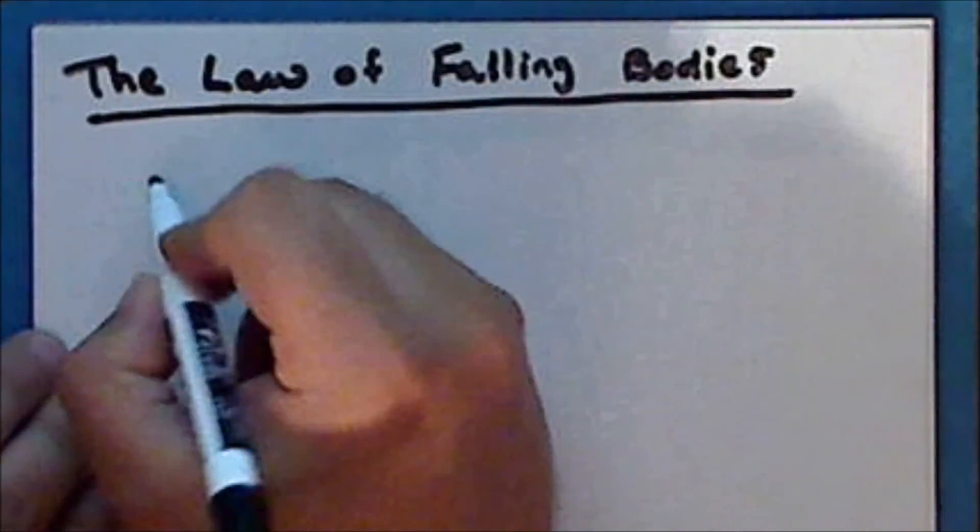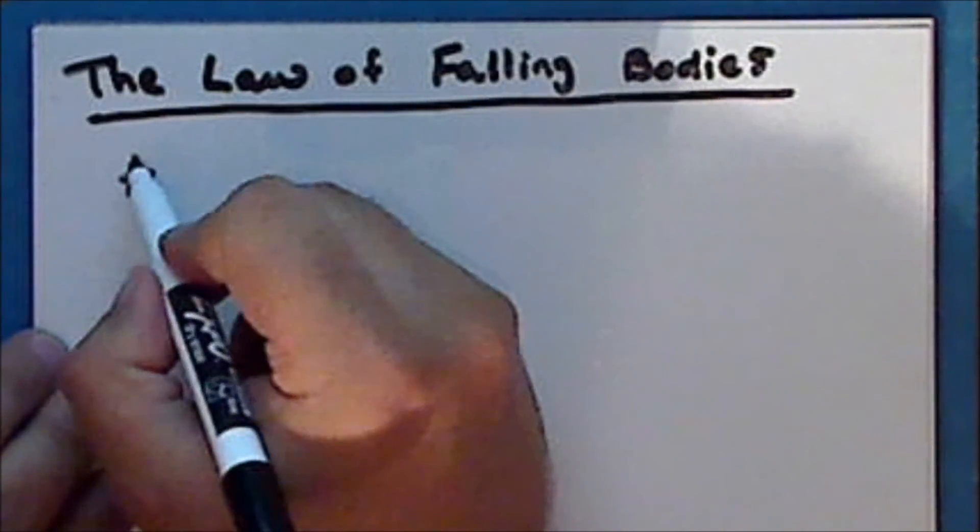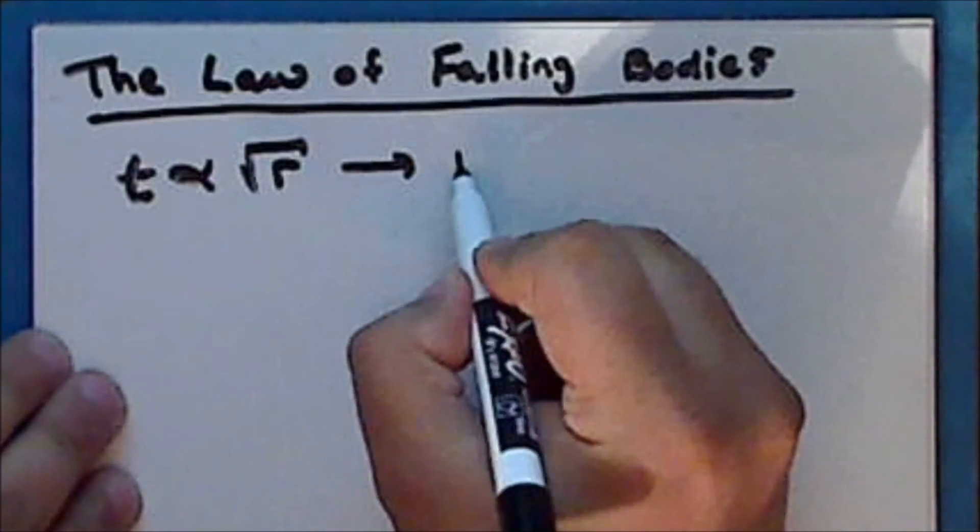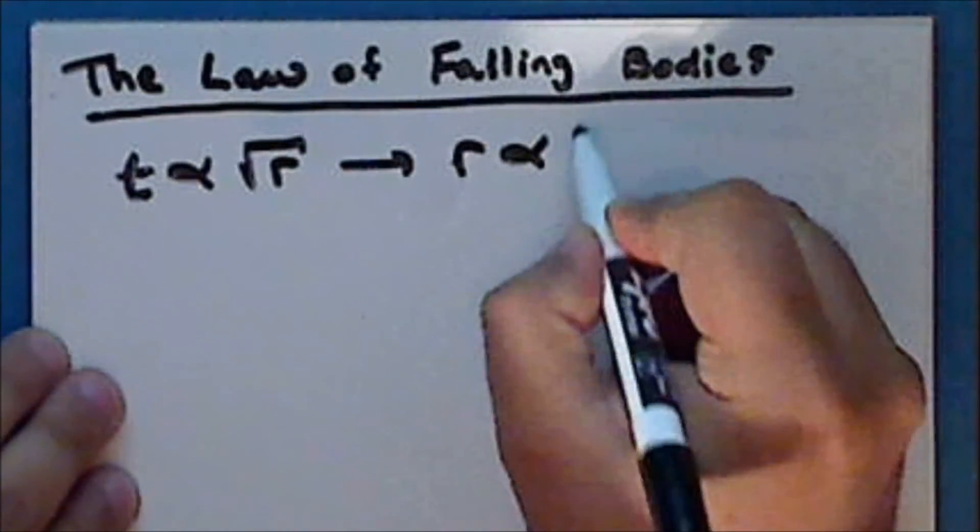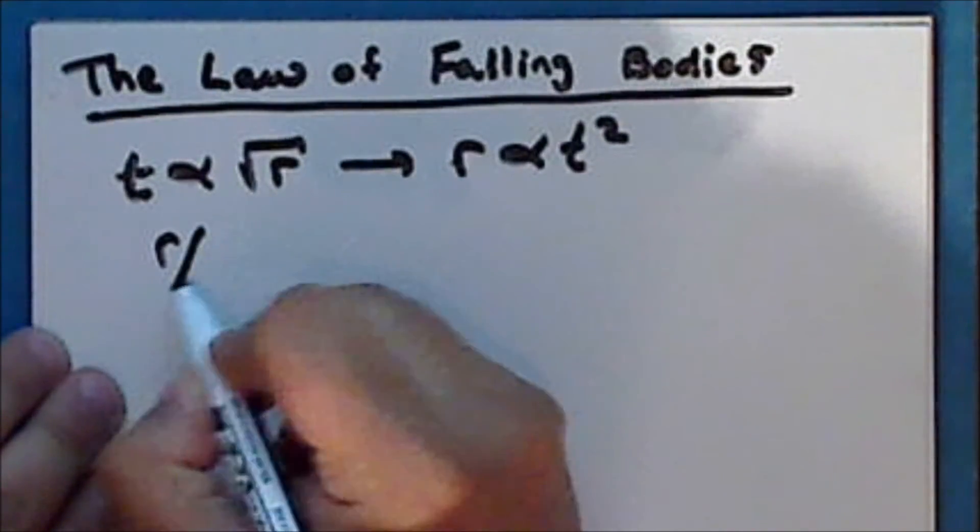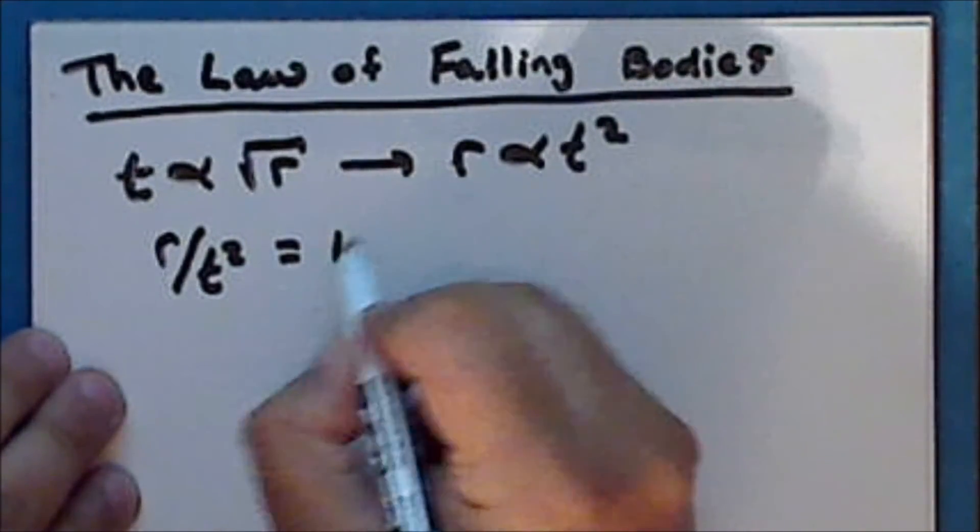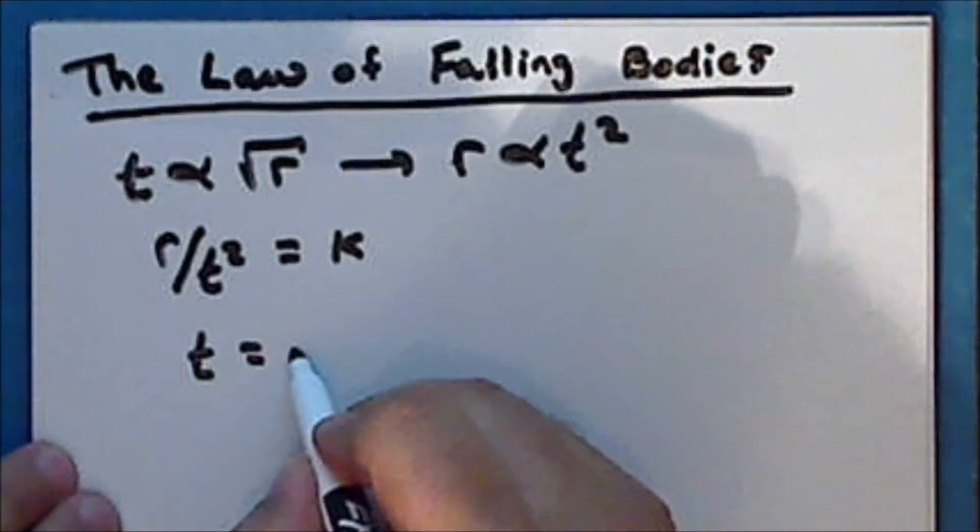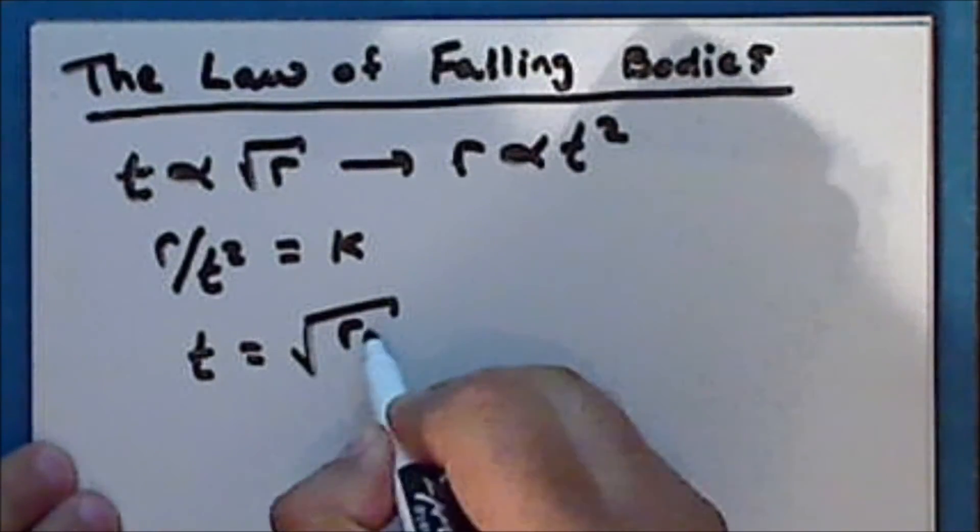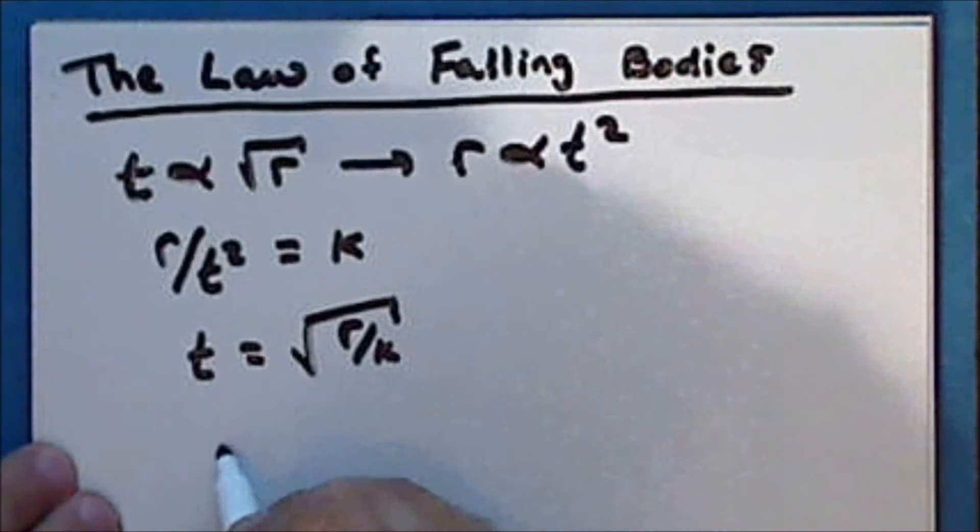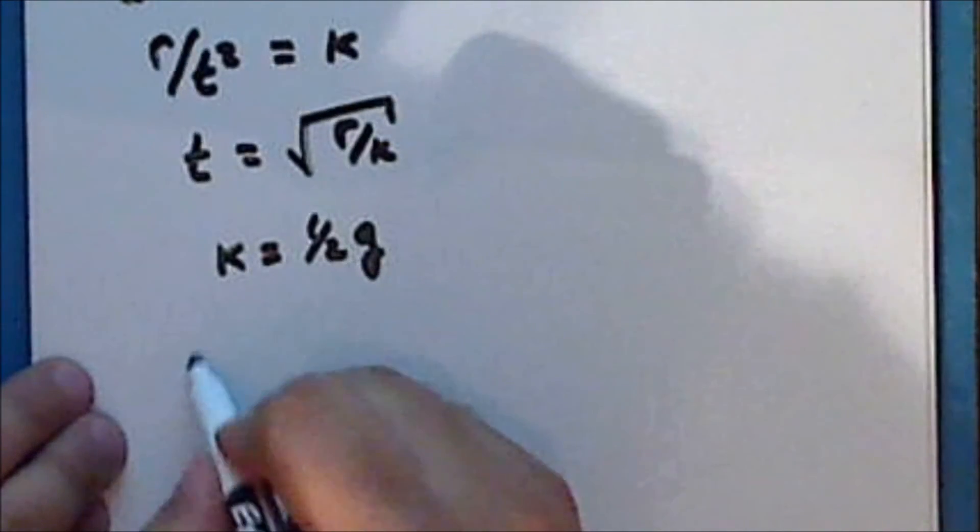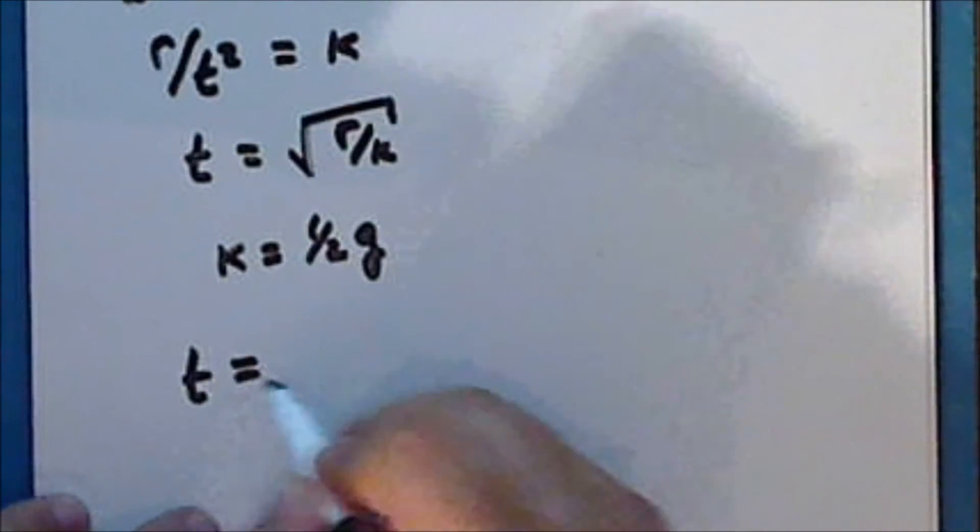Now, through a series of very careful experiments, Galileo was able to demonstrate that the time required for an object to fall a vertical distance r is directly proportional to the square root of that distance r, so that the distance that an object falls is proportional to the square of the time. And, in fact, the ratio of that distance to the square of the time was always a constant, which we'll call k, so that the time required for the object to fall a distance r is the square root of r divided by that constant k. Now, today, we know that this constant k is exactly one-half g, where g is the acceleration due to gravity. And so, the time required for an object to fall a vertical distance r is equal to the square root of two times that distance r divided by g.